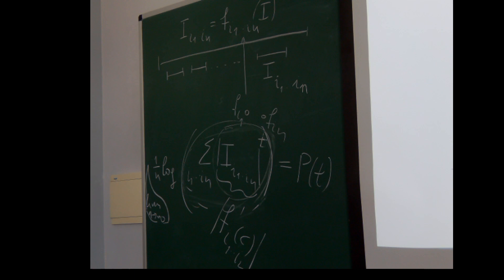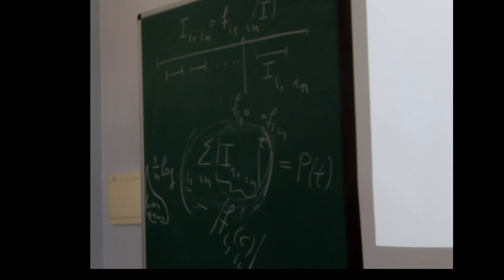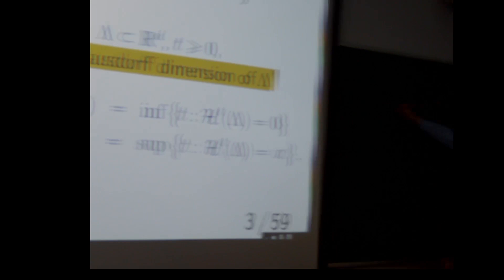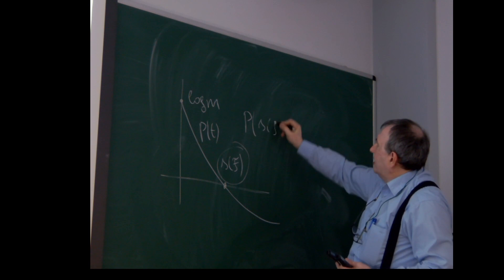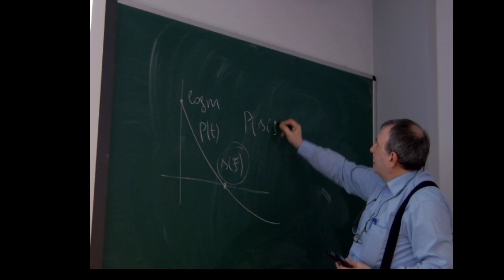When you say the root of the pressure formula — Mark drew this picture about the pressure formula — this is PT, and P(SF) is zero. So if it is true that the root of the pressure formula gives the dimension, this means basically that the best cover is the most natural cover: the cover by the level n cylinders. Geometrically, when you say that the most natural cover is the most economic cover, you can translate this into the statement that the dimension is given by the root of the pressure formula.